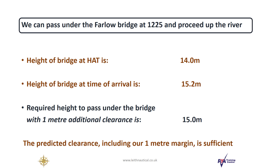We have established that we can pass under the Farlow bridge at 1215 and proceed up the river. We found the height of bridge at HAT is 14 meters, but the height of bridge at the time of our arrival is greater — it's 15.2 meters. And this is because of the fall in tide from HAT.